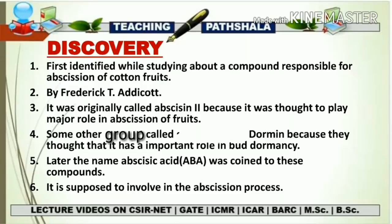At the same time, another group identified a compound named dormin because they thought it played an important role in maintaining or enhancing bud dormancy. After that, all these compounds were given the name abscisic acid, because the major function identified — related to abscisic acid, dormin, and abscessin II — was the abscission process in a plant.